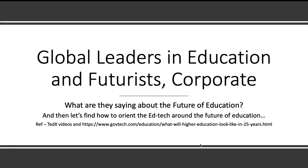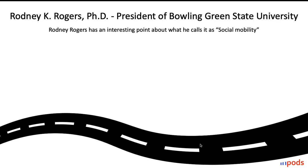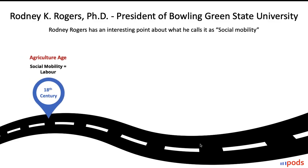That is one reference point to keep in mind when thinking about the future of education technology. The second reference point is what global leaders in education and futurism are saying about expectations from educational institutions. Let's take the first reference here: Rodney Rogers, the president of Bowling Green State University, has an interesting point about what he calls social mobility.